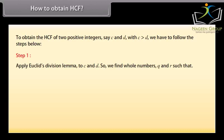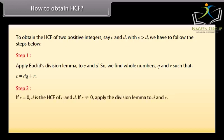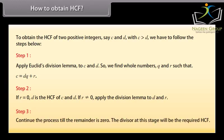Apply Euclid's division lemma to C and D. So we find whole numbers Q and R such that C equals DQ plus R. Step 2: If R equals 0, D is the HCF of C and D. If R is not equal to 0, apply the division lemma to D and R. Step 3: Continue the process till the remainder is 0. The divisor at this stage will be the required HCF.